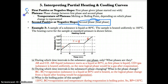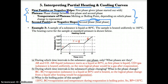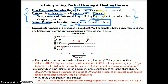Unlike full heating and cooling curves, which have three phases and two phase changes, partial heating and cooling curves only have two phases and one phase change. The first slope is the first phase given in the problem, the second slope is the second phase given, the plateau represents the phase change between them, and the temperature of the plateau is the melting or boiling point depending on which phase change is represented.